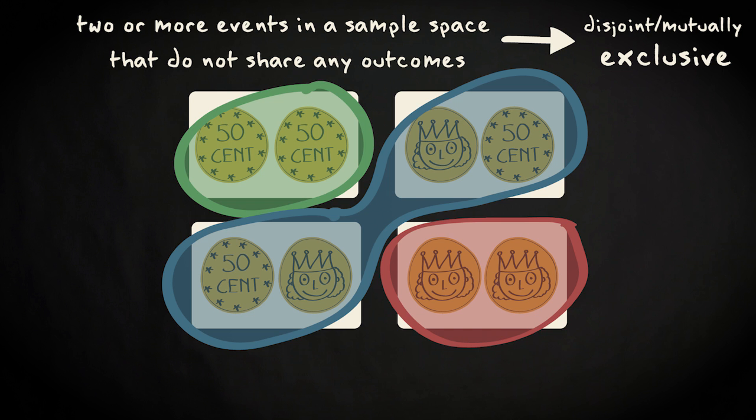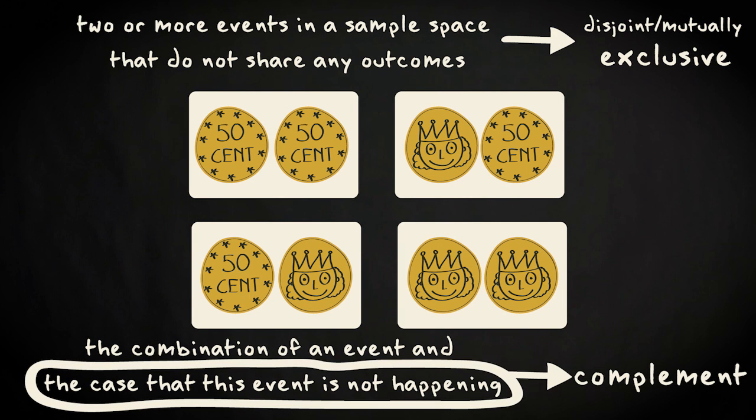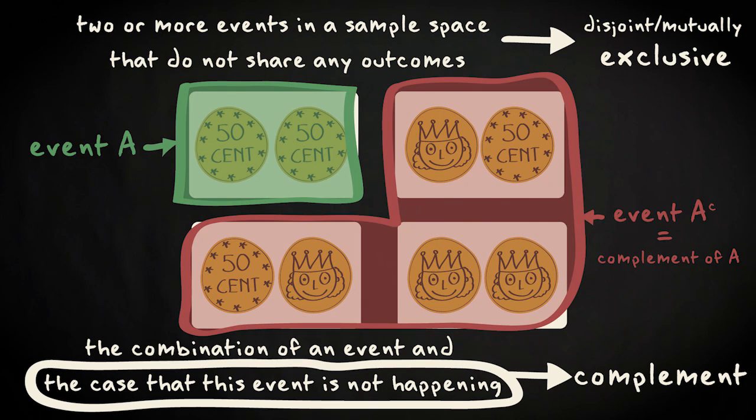A special pair of disjoint events is the combination of an event and its opposite, the case that this event is not happening. This opposite case is called the complement. Here it could be no heads versus the other three outcomes.